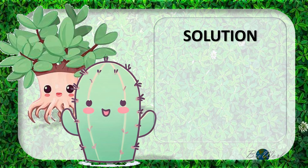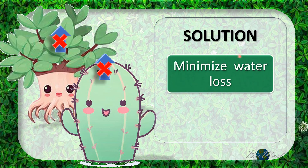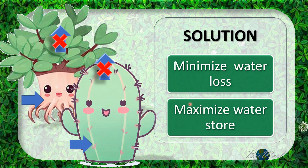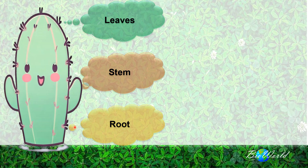The solution to their problems lies in firstly minimizing water loss, and secondly maximizing water storage. Now let's look at how both the halophytes and the xerophytes overcome this problem. To begin with, we'll start with the xerophytes. The leaves, stem, and roots of the xerophytes are all adapted to overcome water problems.